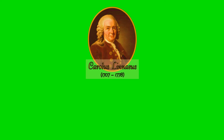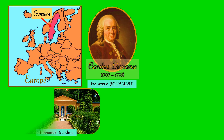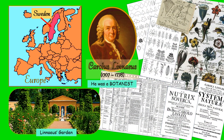Over the centuries, many scientists have tried to group living organisms in different ways. The method used in modern times was devised by Carolus Linnaeus. He lived from 1707 to 1778 in Sweden. He was a botanist who studied plants, compared them, and saw how similar and different they are. He developed a way in which plants can be grouped or classified. This system of classification was later used by other scientists to classify animals. Today, scientists group all living organisms in a similar way to that used by Linnaeus.